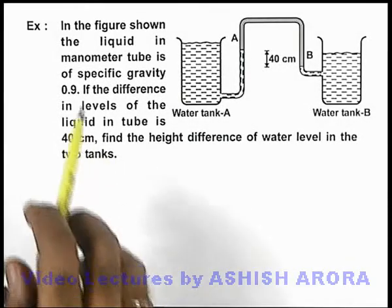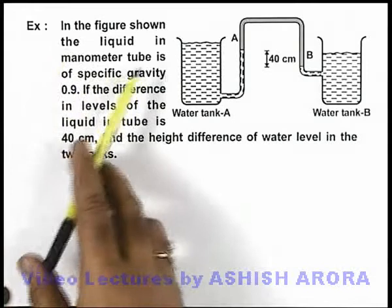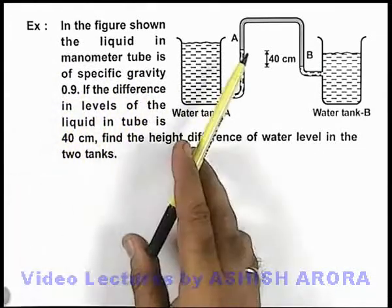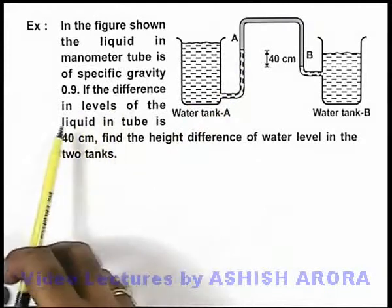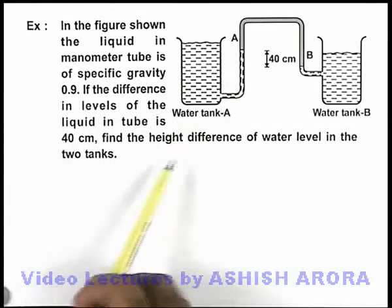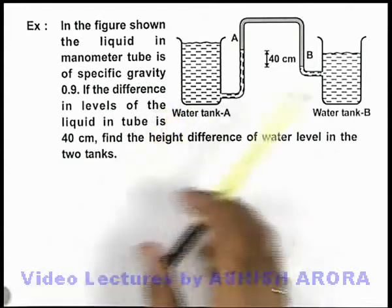Here in this example, we are given that in the figure shown, the liquid in the manometer tube is of specific gravity 0.9. If the difference in level of the liquid in the tube is 40 centimeters, we are required to find the height difference of water level in the two tanks.